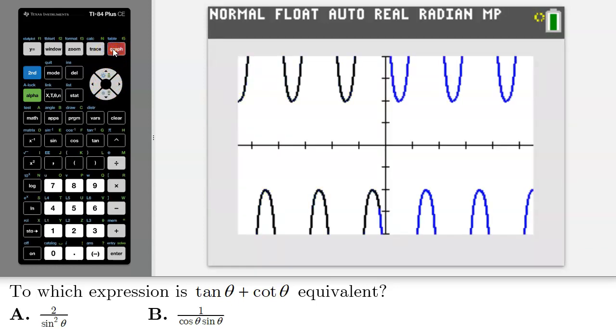And we've got the blue graph and it looks like the black graph is graphing right on top of it. Therefore we can conclude that tan theta plus cotangent theta is equivalent to B: 1 divided by cos theta times sine theta.